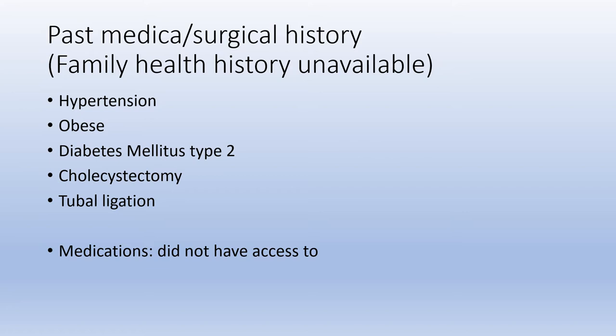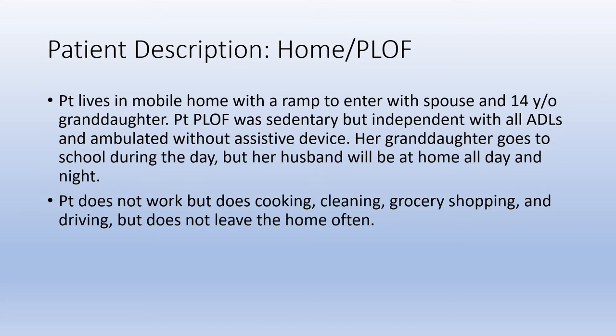Past medical and surgical history includes hypertension, obesity, type 2 diabetes, cholecystectomy, and tubal ligation. Family health history and medications were not available for access. Her prior level of function: she lives in a mobile home with a ramp to enter, with her spouse and 14-year-old granddaughter. She was sedentary but independent with all ADLs and ambulated without an assistive device. Her granddaughter goes to school during the day, but her husband is home all day and night. The patient does not work but does cooking, cleaning, grocery shopping, and does drive, though she does not leave the home often.